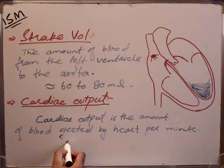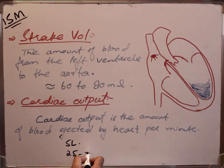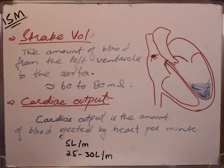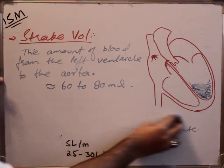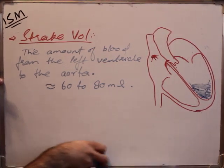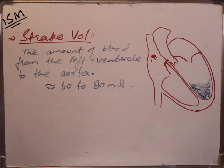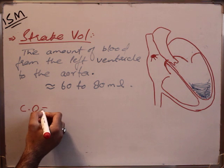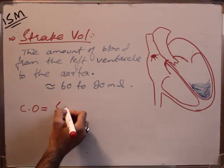Normally, cardiac output is 5 liters per minute, and during exercise it increases to 25 to 30 liters of blood per minute. There is a general equation for this: cardiac output is equal to stroke volume multiplied by heart rate.